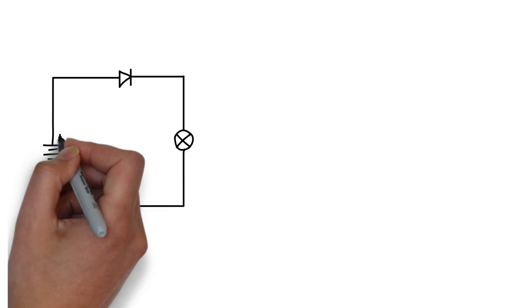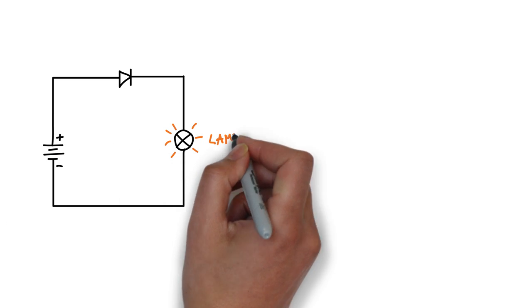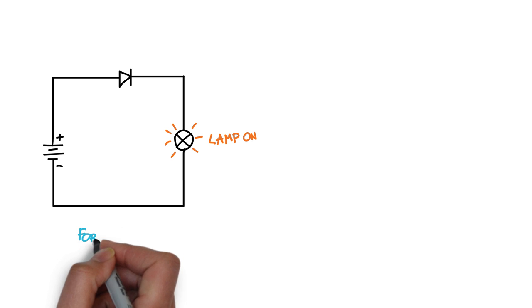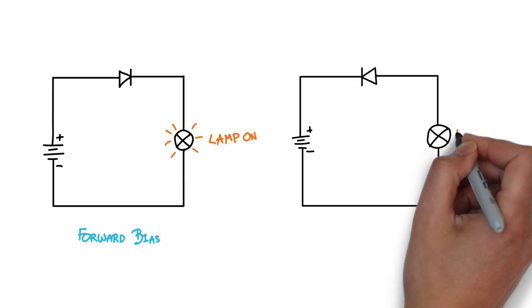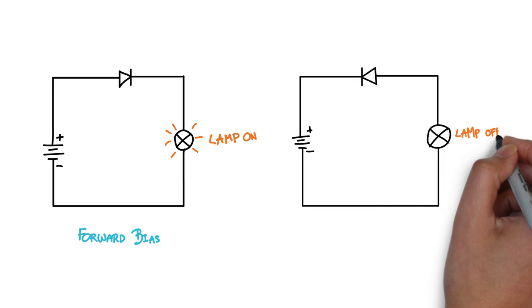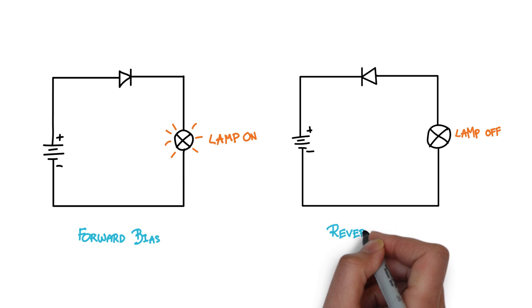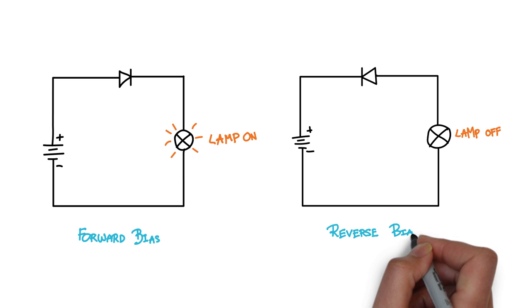Let's connect diode in series with the lamp. When connected this way, the lamp lights up, indicating that there's a current flowing through the lamp. In this case, the diode is said to be forward biased. But if I reverse the diode, the lamp won't light up because the diode prevents the current from flowing. This is where the diode is said to be reverse biased.